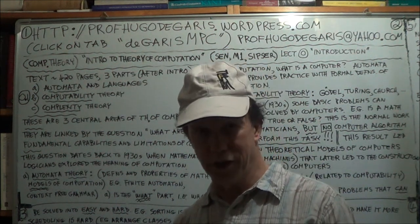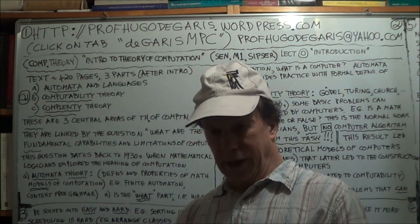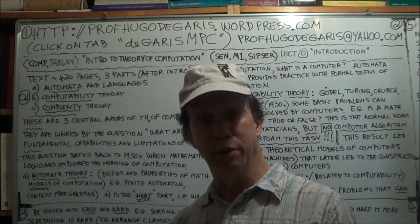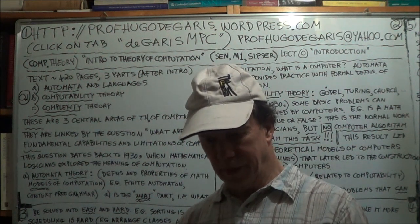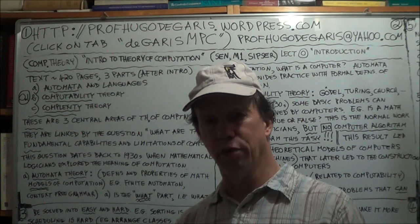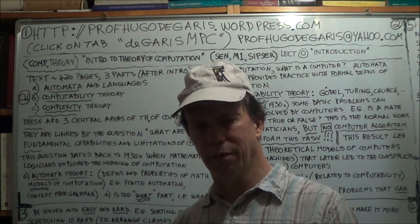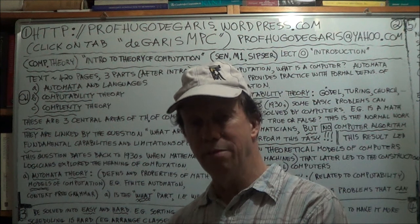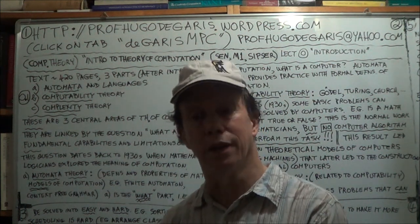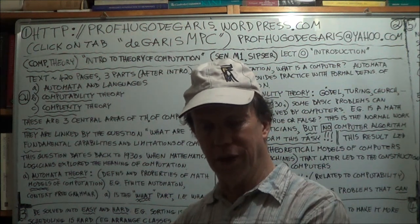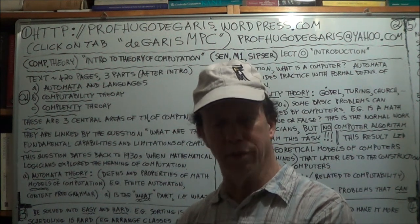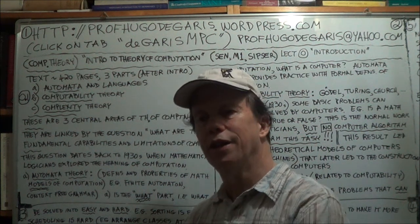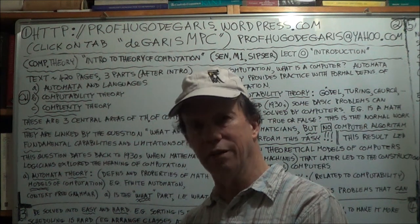Gödel wasn't the only one interested in the foundations of mathematics. A bit earlier in the century there was a famous German mathematician called Hilbert — the same Hilbert of Hilbert space in quantum mechanics. He wanted a proof that mathematics was consistent — that given a certain set of axioms for pure mathematics, it would be impossible to derive contradictory theorems. He suggested a kind of procedure, like turning a handle, that given the axioms you could prove any derivable statement.